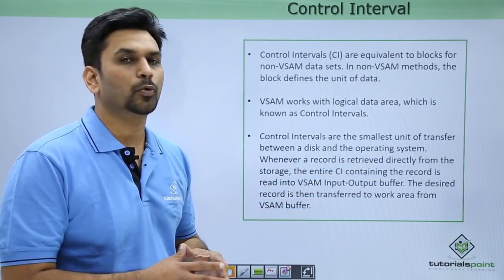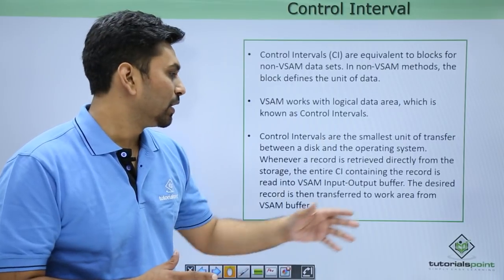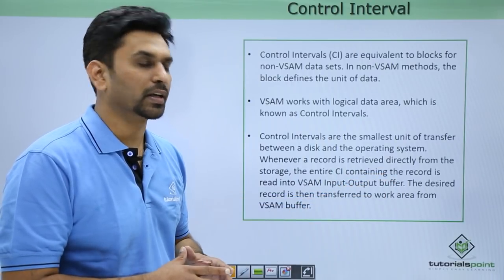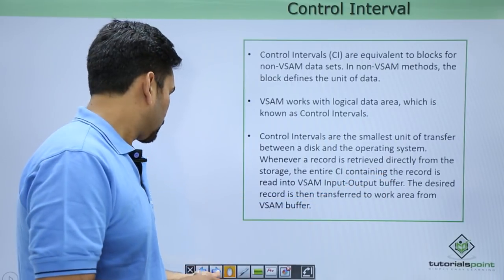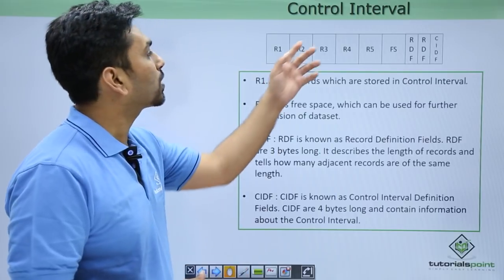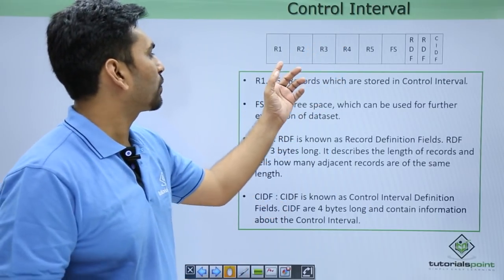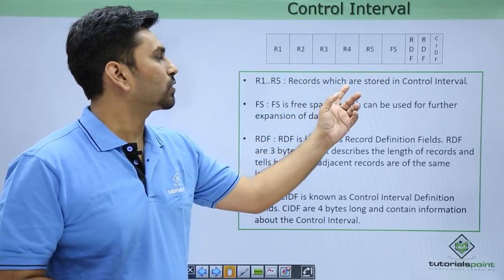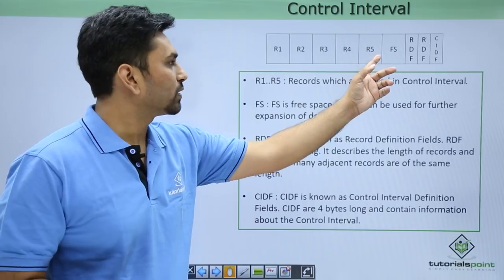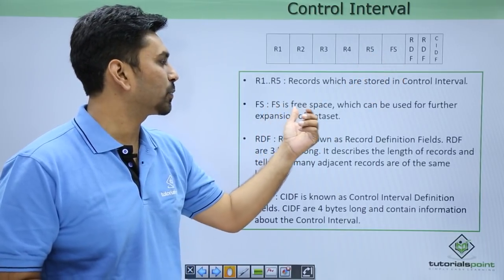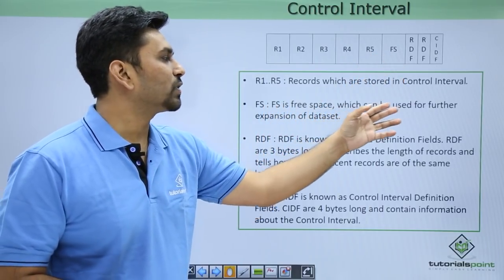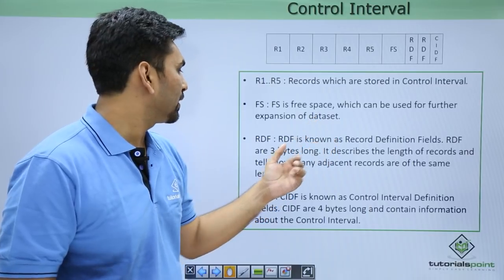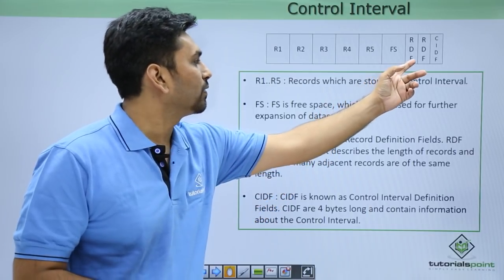The desired record is then transferred to the work area. This is how a control interval looks: from R1 to R5 the records are stored, then we have free space (FS), which can be used for further expansion of the data set.